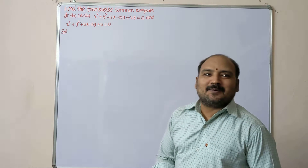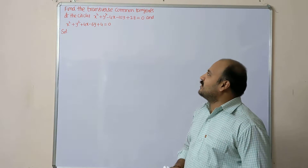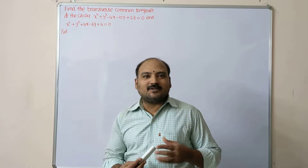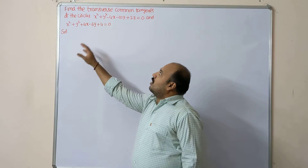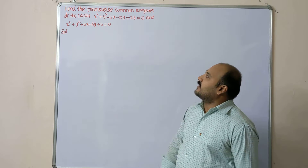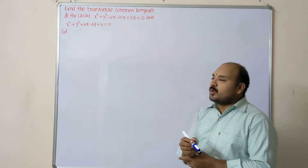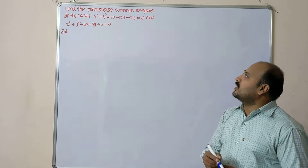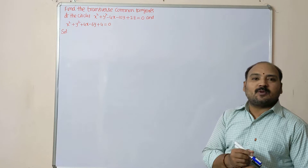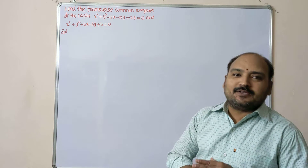Hi, hello dear students, welcome to our channel Maths with Panindra. In this video we are going to discuss LAQ — one of the important questions in circles: find the transverse common tangents of the circles x² + y² - 4x - 10y + 28 = 0 and x² + y² + 4x - 6y + 4 = 0. So, transverse common tangents.